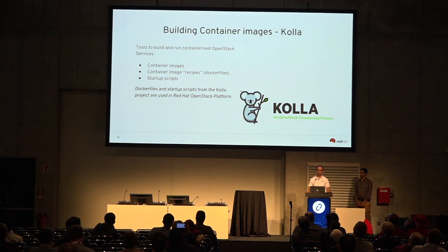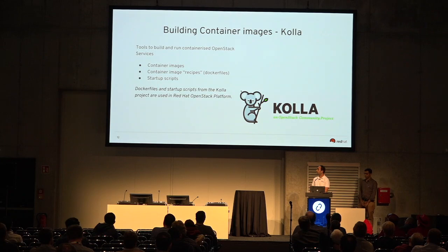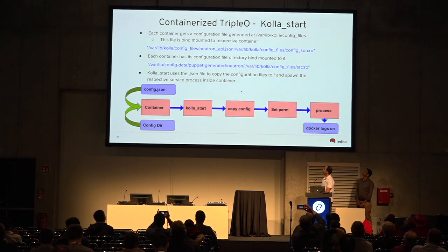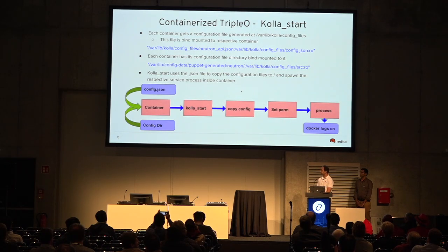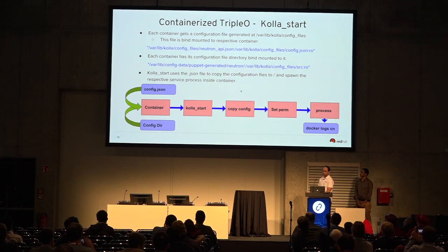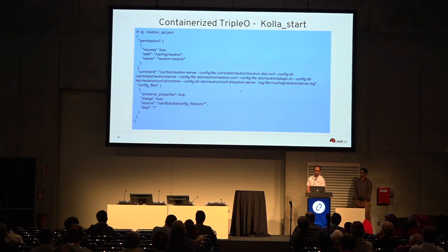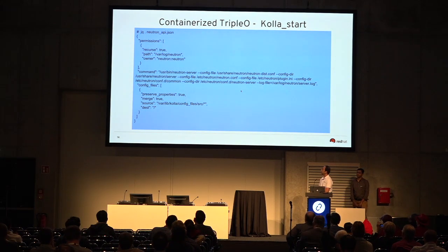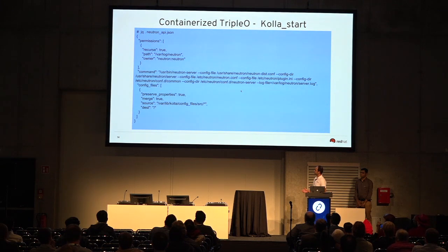Once Docker Puppet generates the configuration, Kolla starts the containers. Kolla is a project that builds container images and has all containerized services and startup scripts. The configuration is put inside the container and the config directory is also put in the container. Kolla start copies the configuration on each container, sets permissions, and then starts the container process. The config.json for a particular service shows the permissions set on files, the command to run which is to start the service, and the source which is the Kolla config source files.